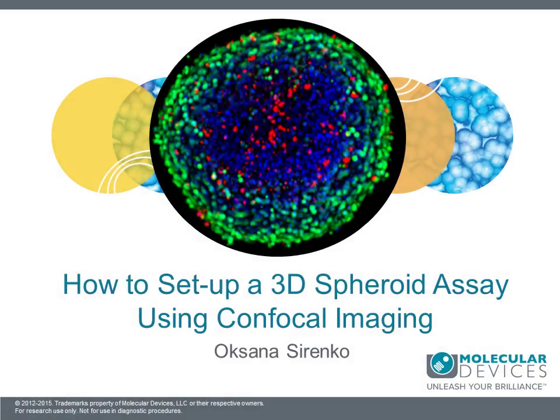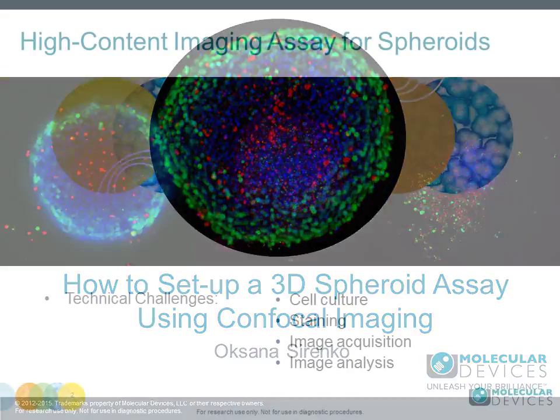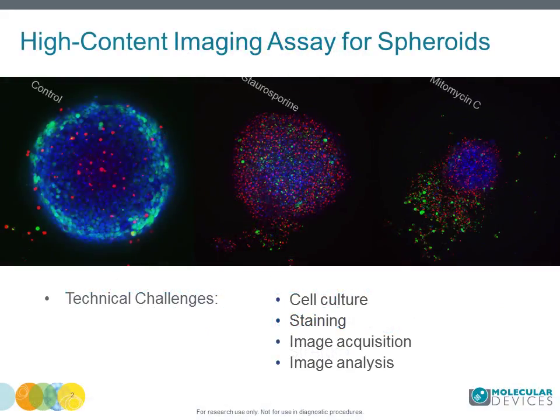How to set up a spheroid assay using confocal images. 3D cultures are believed to have the advantage of better representation of human tissues, including architecture, organization, and cell interaction.